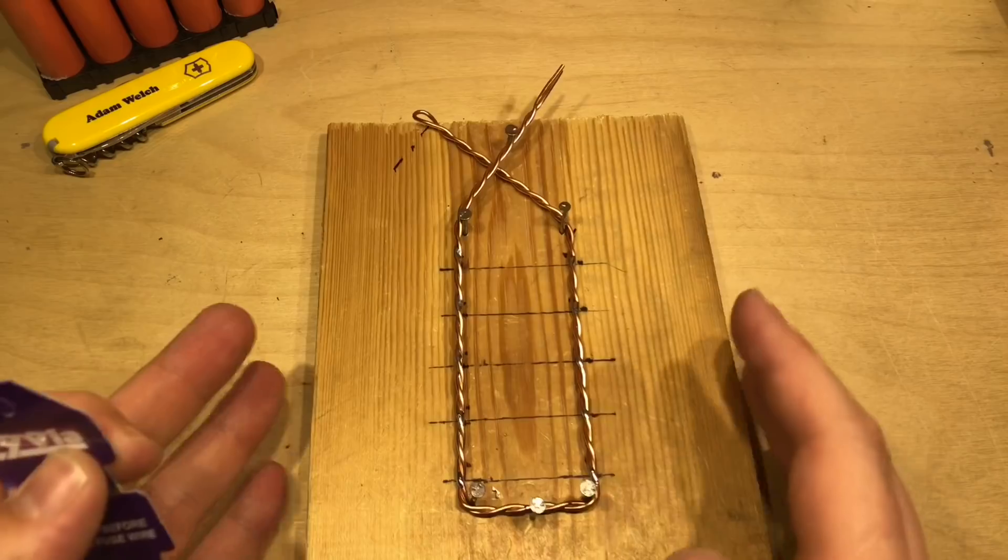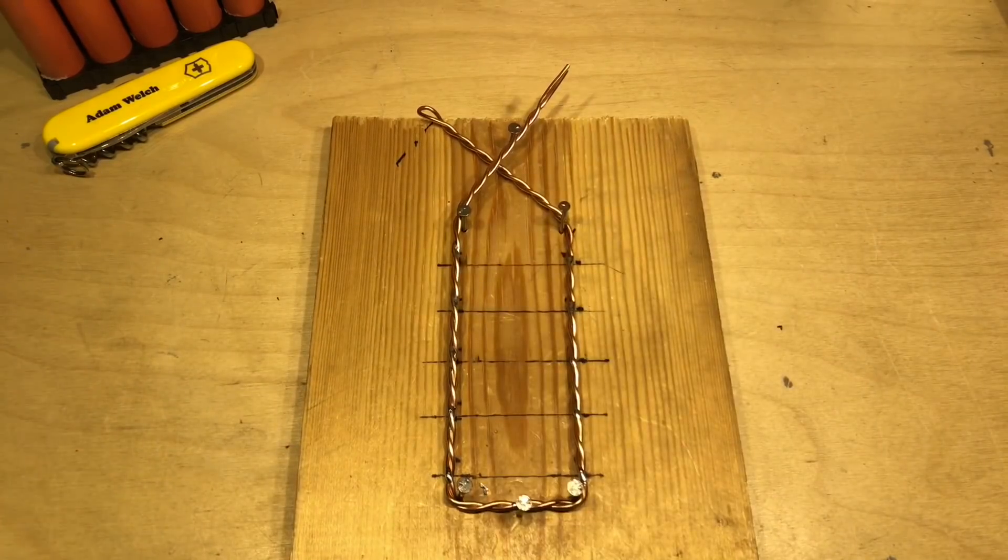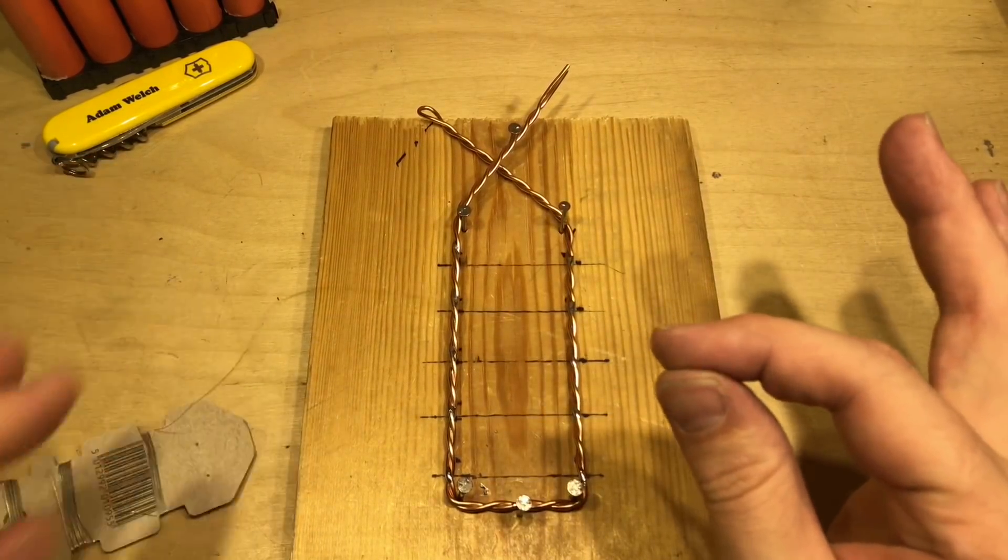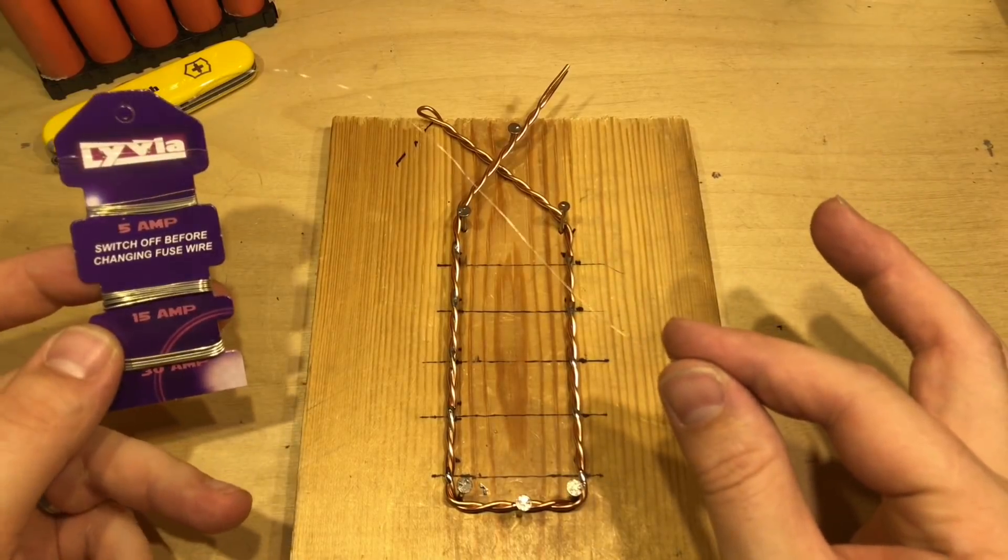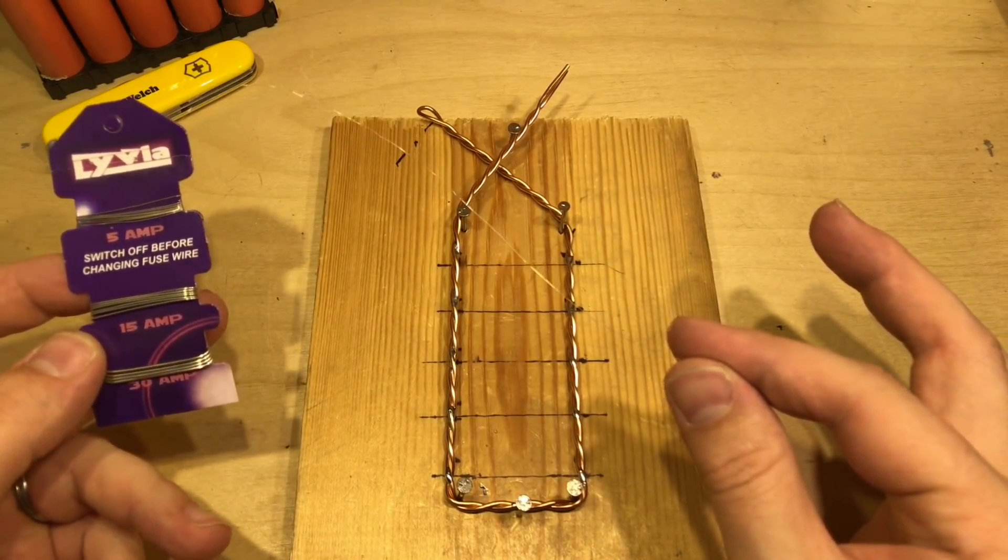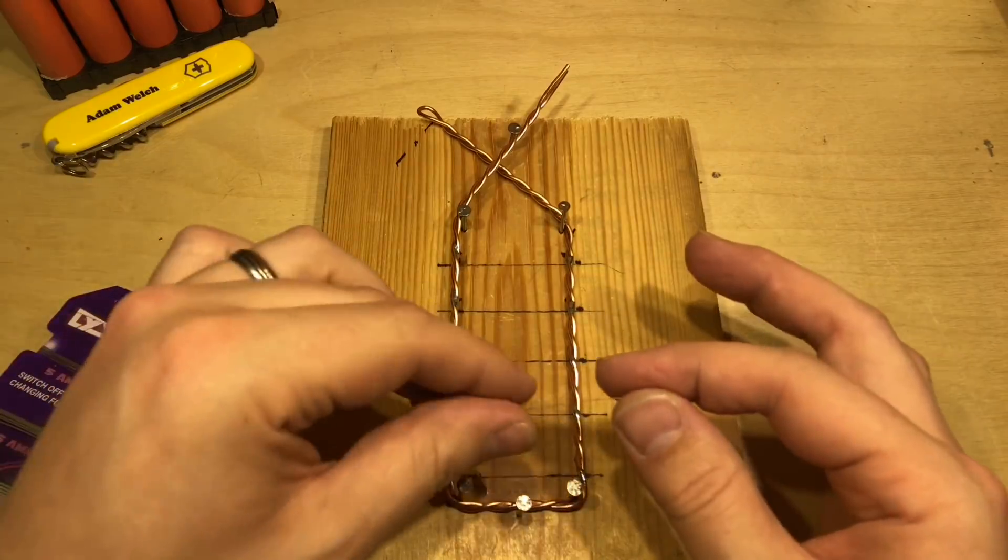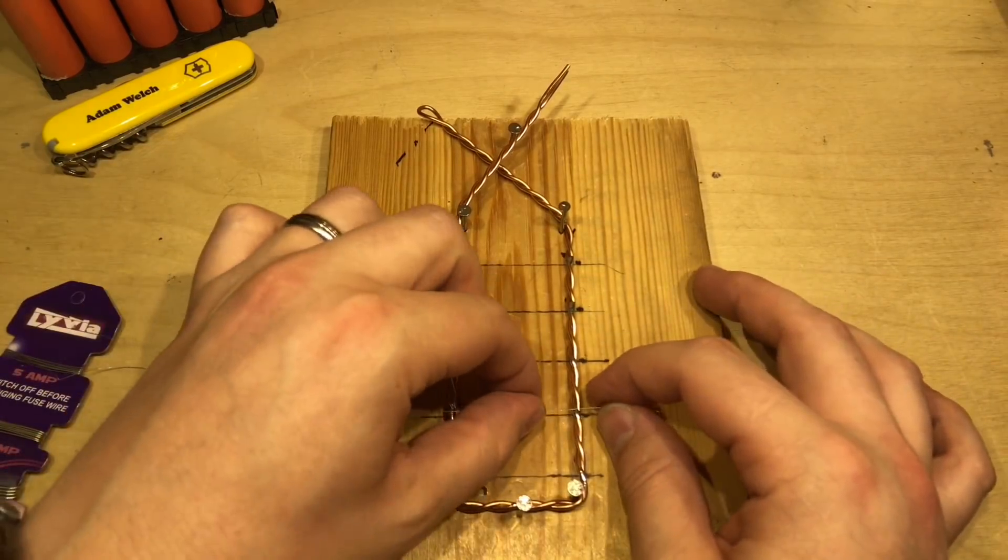Before the copper gets too cold now that I've done all that soldering I've got my 5 amp fuse wire here which is taken from a card of 5, 15 and 30 amp domestic fuse wire and let's do this one first.